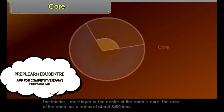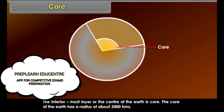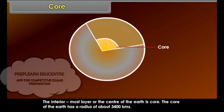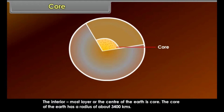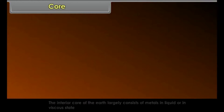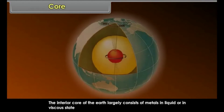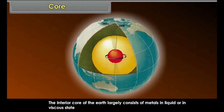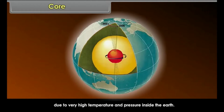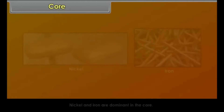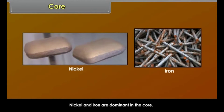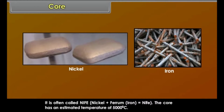Core. The innermost layer, or the center of the Earth, is the core. The core of the Earth has a radius of about 3,400 kilometers. The interior core largely consists of metals in liquid or viscous state due to very high temperature and pressure inside the Earth. Nickel and iron are dominant in the core — it is often called NIFE, N-I-F-E.